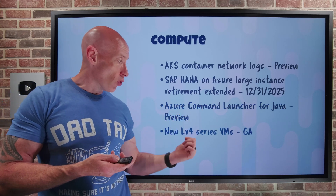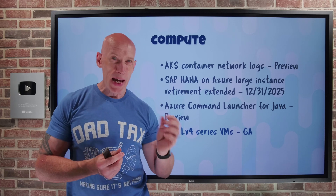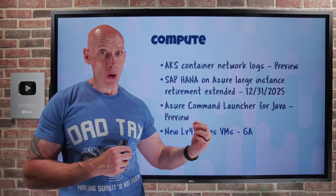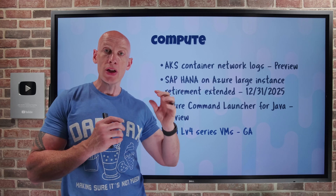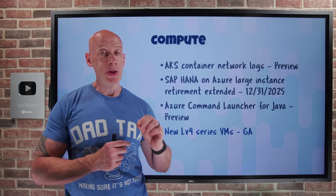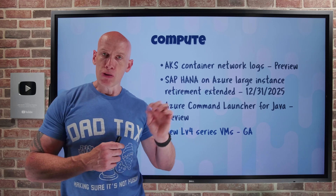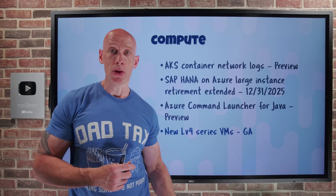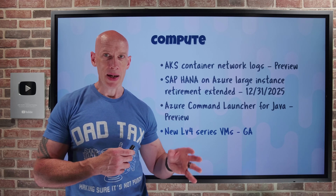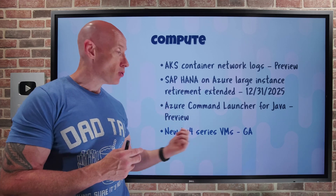The new LV4 series VMs have gone GA. These are storage optimized and available in both Intel and AMD variants. The AMD variant — LAO — is focused on more memory and storage per virtual CPU. The LAO V4 can have between 2 and 32 virtual CPUs, with 8 gigabytes of memory and 720 gigabytes of local NVMe per vCPU. The regular LA (AMD) and regular L (Intel) can have between 2 and 96 virtual CPUs with 8 GB of memory but 240 gigabytes of local NVMe per vCPU.